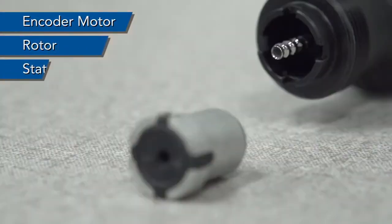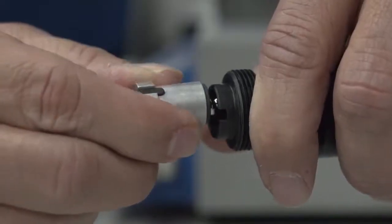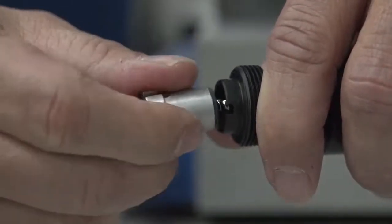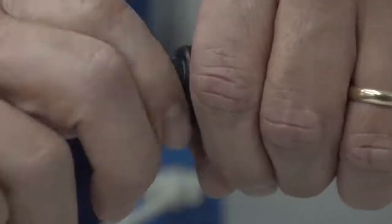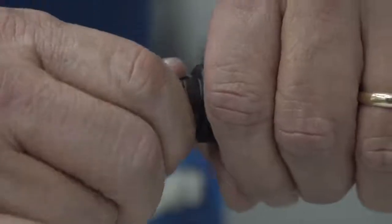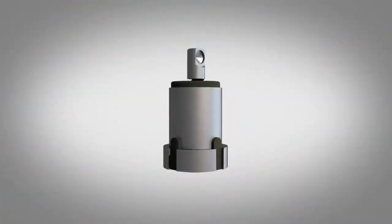The pump consists of three main components: an encoder motor, a rotor, and a stator. The rotor is connected to the motor by a flexible coupling. The stator acts as a fluid chamber and wraps around the rotor to provide a positive seal for each cavity on the rotor.